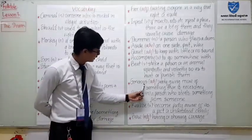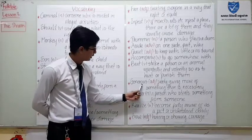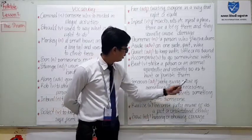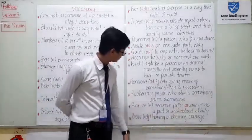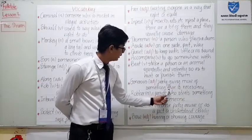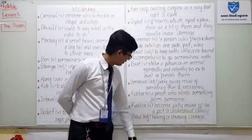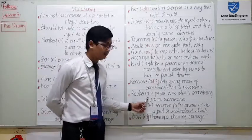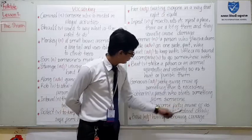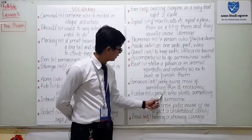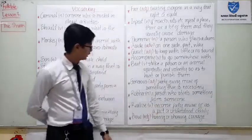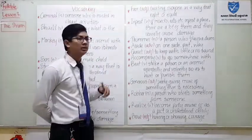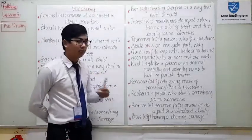Next word is 'generous.' Generous. Function: adjective. Meaning: freely giving more of something than is necessary. Next word is 'robber.' Robber. Function: noun. Meaning: a person who steals something from someone. For example: if I see someone rob anything from me, I can call him or her a robber.